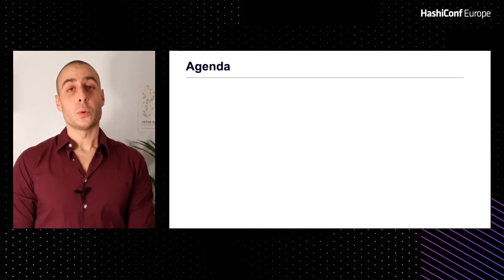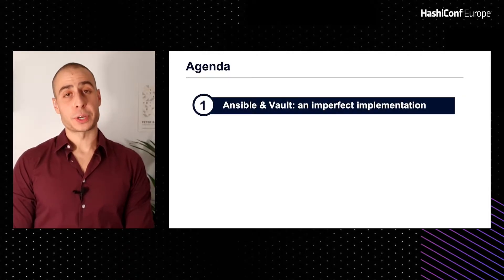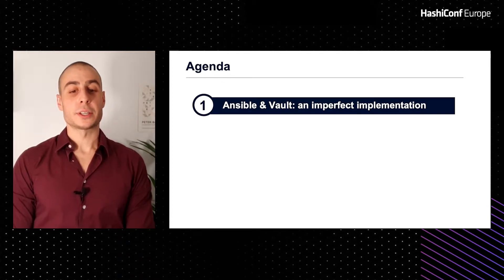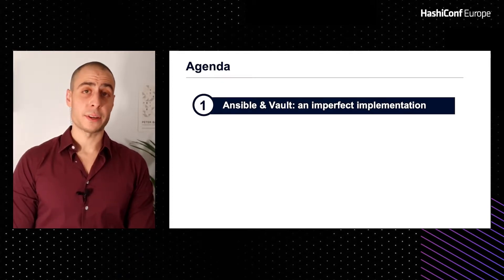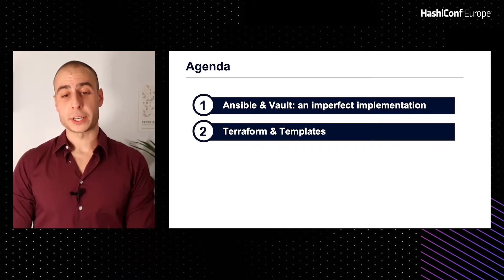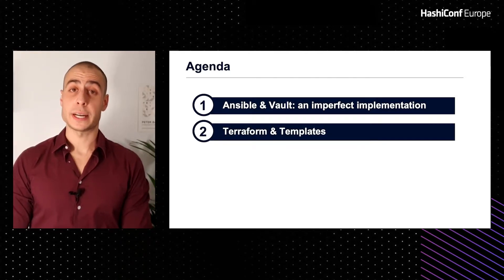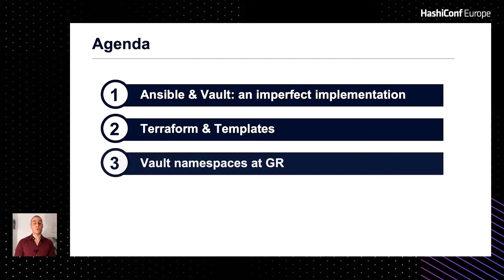Hi everyone. To start off our presentation, I'll give you a brief introduction about G-Research, the IAM team, our objectives, and then catch you up on a brief history of Vault at GR. We'll then begin covering the main points of our presentation, talking first about the initial efforts to implement and productionize Vault and where they fell short. Next, Morgan is going to take you through how we settled on Terraform and templating as the keys to overhauling how Vault is used at GR. We'll then share what Vault namespaces look like today and wrap up with how we've encouraged the adoption and usage of our new model.